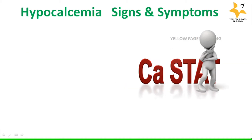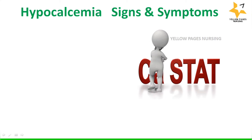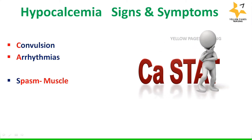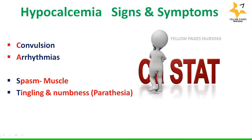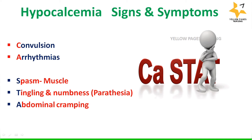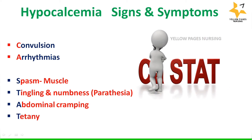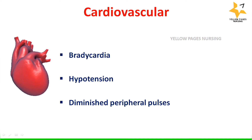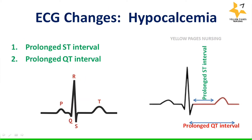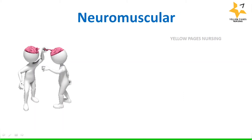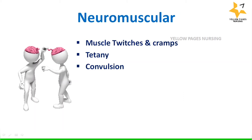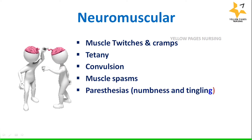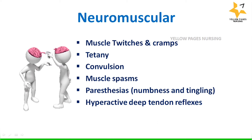The clinical manifestations of hypocalcemia are categorized under the mnemonic 'CA STAT': convulsions, arrhythmias, spasm of the muscles, tingling and numbness sensation (paresthesia), abdominal cramping, and tetany. System-wise, cardiovascular symptoms include bradycardia, hypotension, and diminished peripheral pulses. ECG changes include prolonged ST interval and prolonged QT interval. Neuromuscular symptoms include muscle twitches and cramps, tetany, convulsions, muscle spasms, paresthesias, hyperactive tendon reflexes, anxiety, and irritability.